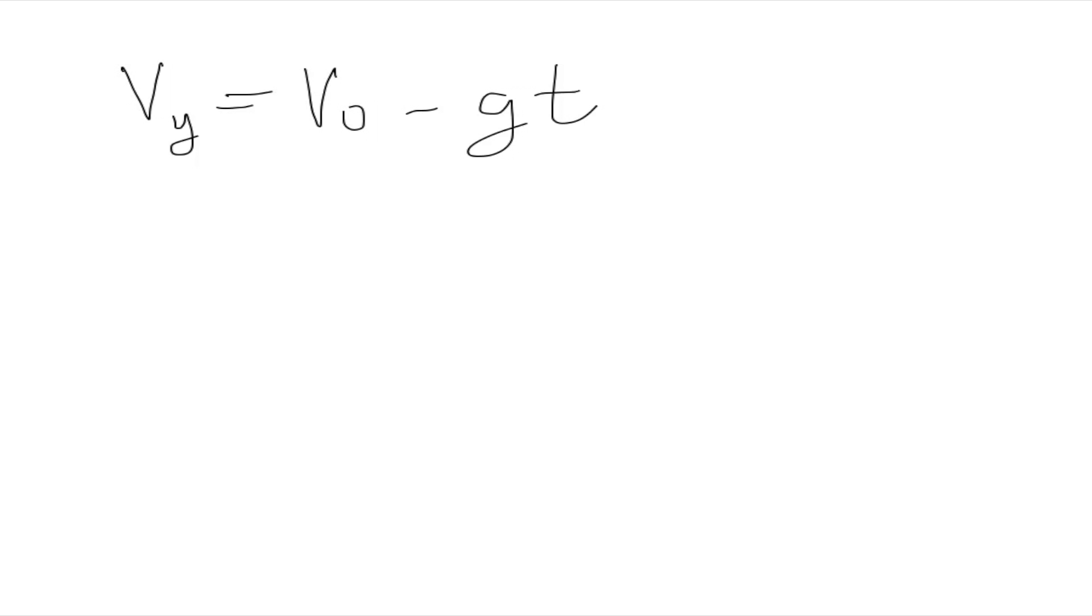We have gravity, we have time. We know that the initial velocity is zero. So we can say that the final velocity is going to be equal to negative gravity times time. That is simply negative 9.8 meters per second squared times 1.1 seconds.